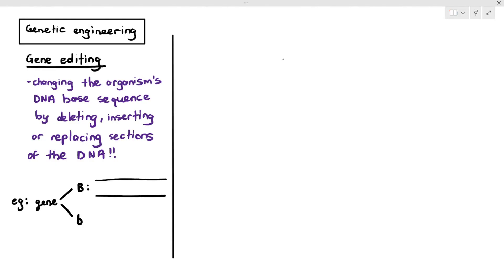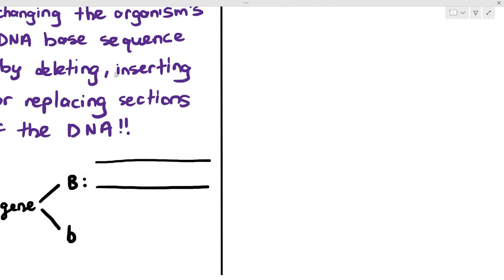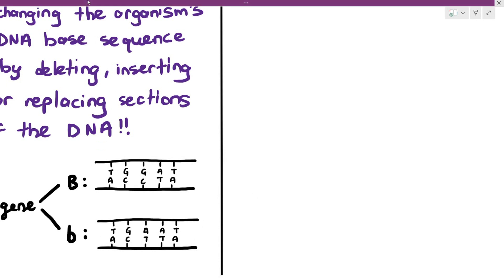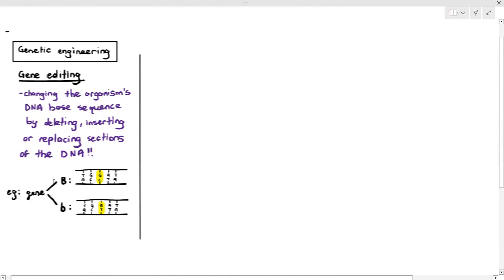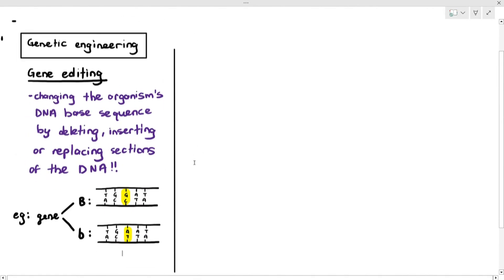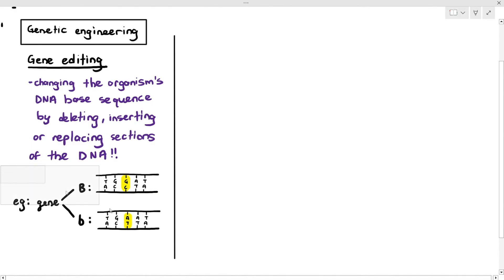which are the dominant allele large B and the recessive allele small b. For the dominant allele large B, this is just an example, please do not memorize this. The dominant allele has a base sequence of A, C, C, T, A, T, G, G, A, T. Whereas the recessive allele has a base sequence of A, C, T, T, A, T, G, A, T. So the base sequences between the dominant and recessive alleles are quite similar, with the exception of the highlighted region, the G, C, and also the A, T.